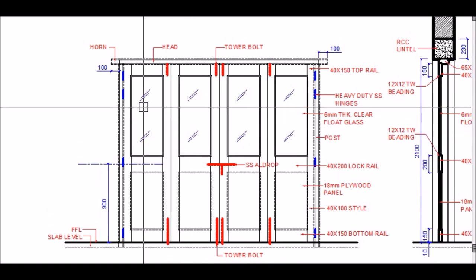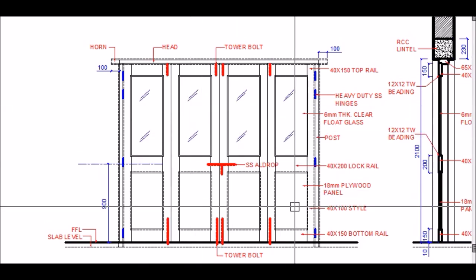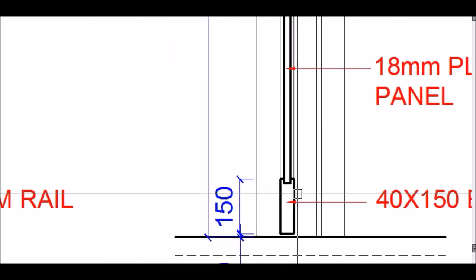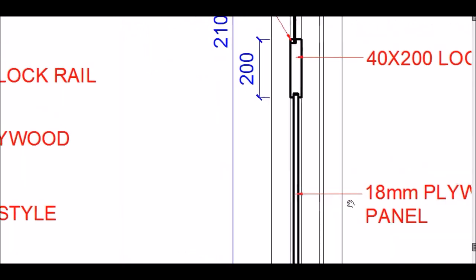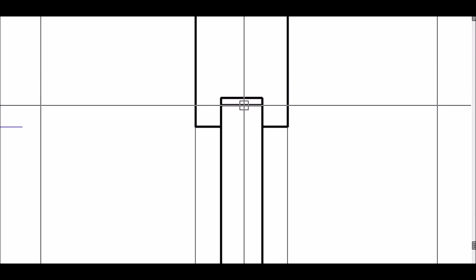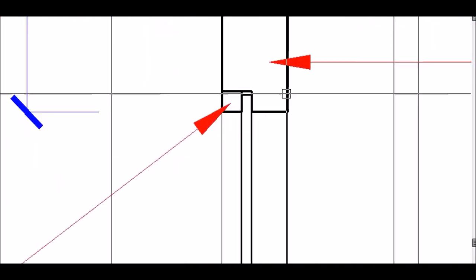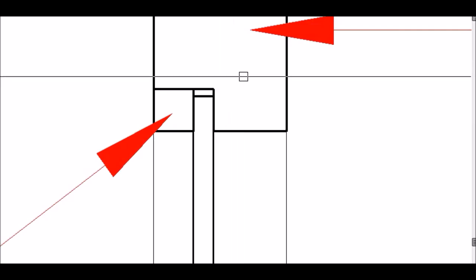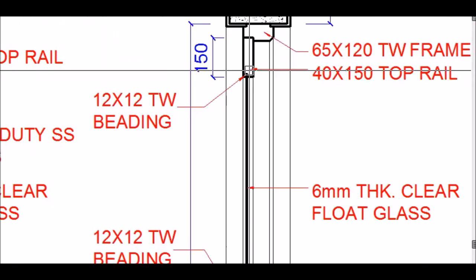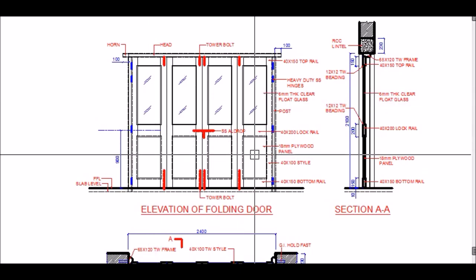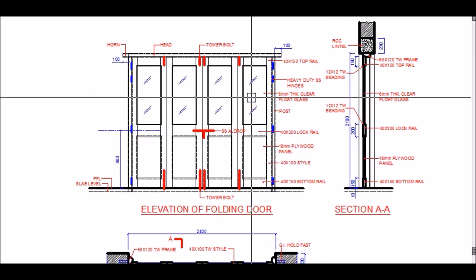The upper portion of each shutter has glass and the lower portion has an 18mm thick plywood panel. The panel is not fixed with beading but is inserted directly into the lock rail and the bottom rail. A small gap is left around the panel for expansion and contraction. Similarly, a gap is left at the top of the glass, which is held in place with beading.